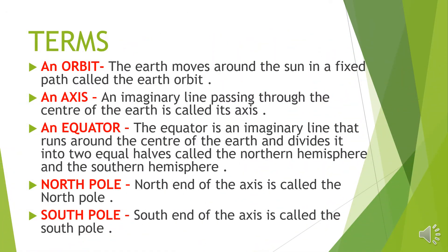Key terms: Orbit — the Earth moves around the sun in a fixed path called the Earth's orbit. Axis — an imaginary line passing through the center of the Earth is called its axis. Equator — the equator is an imaginary line that runs around the center of the Earth and divides it into two equal halves.